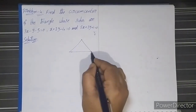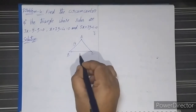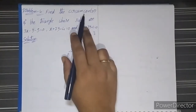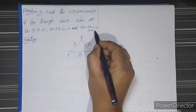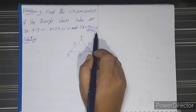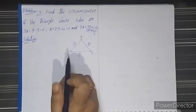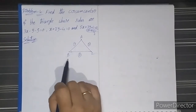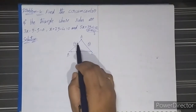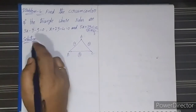Let this be the given triangle ABC. The line equations are: first line is AB, second line is BC, and third line is AC. For finding the circumcenter, we know the condition SA = SB = SC. We have the vertices of triangle ABC, and we can find them by solving the equations. By solving equations 1 and 2 we get vertex B, solving equations 2 and 3 gives vertex C, and solving equations 1 and 3 gives vertex A.